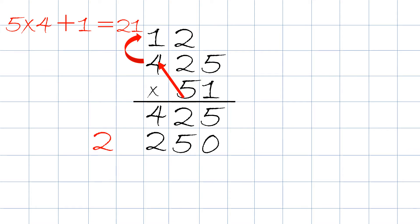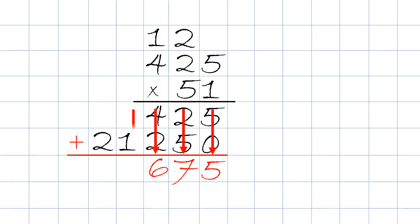We then add up the numbers. We always start from the right column. 5 plus 0 equals 5, 2 plus 5 equals 7, 4 plus 2 equals 6, 0 or nothing plus 1 equals 1, 0 plus 2 will equal 2.